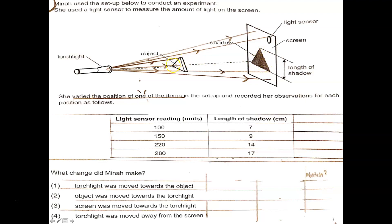there's a screen, this is a shadow cast by this triangular object. This is the length or height of the shadow. And there's a light sensor here. So the light sensor will measure the light that is not blocked by the object. Remember, light travels in a straight line.